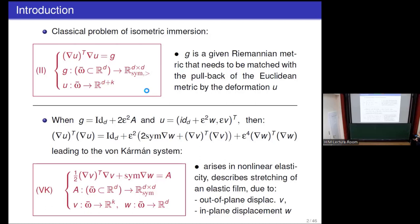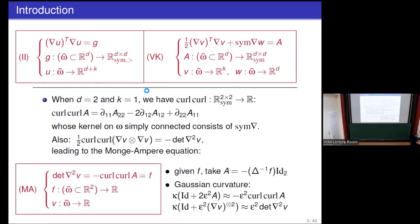In the Von Kármán system, I'm given A and want to find W (D-dimensional, in-plane) and V (K-dimensional, out-of-plane). When D equals 2 and K equals 1, one can interpret W as in-plane displacement and V as out-of-plane displacement, and the system reduces to the classical Von Kármán equations. For general D and K dimensions, this is the system we study.